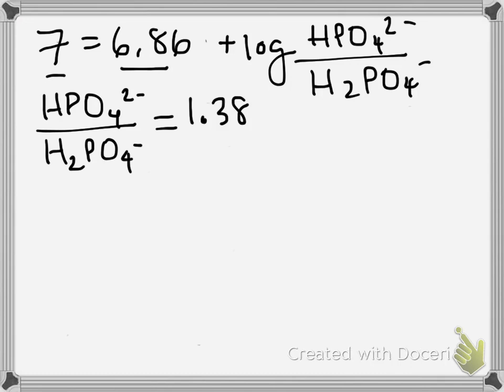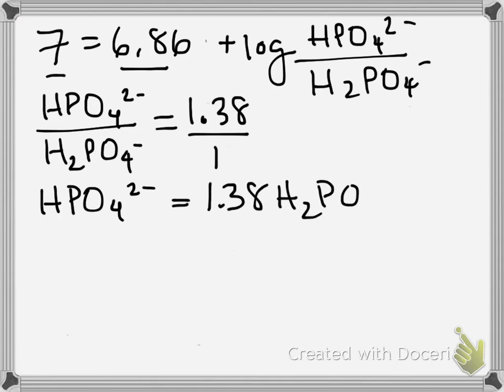At this point, I've talked about this before, there's two routes you can take that'll take you to the same final answer. It's good to understand both ways, use the way that makes most sense to you. So I'll show both ways. If we were to cross-multiply, we'd get HPO4 equals 1.38 times H2PO4.